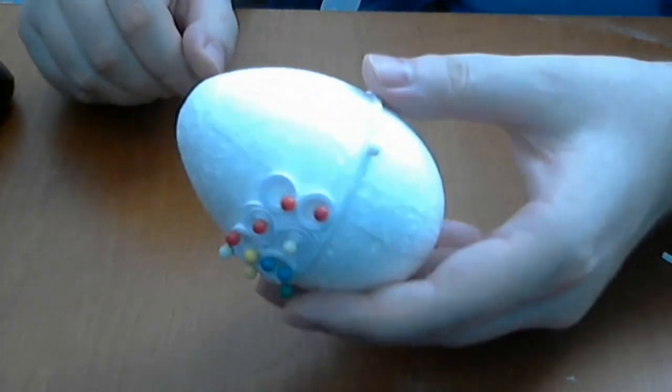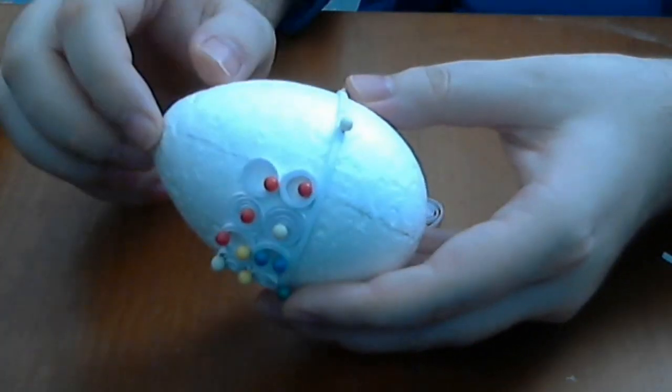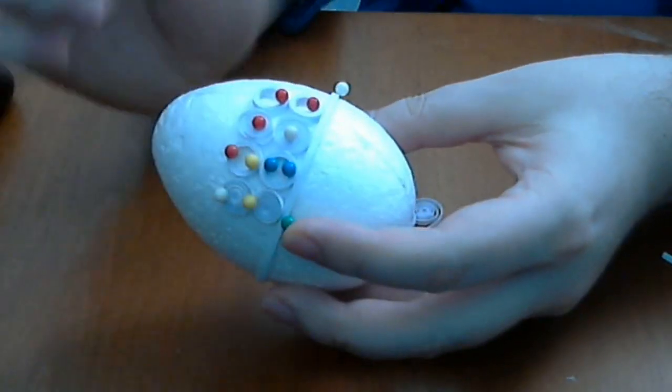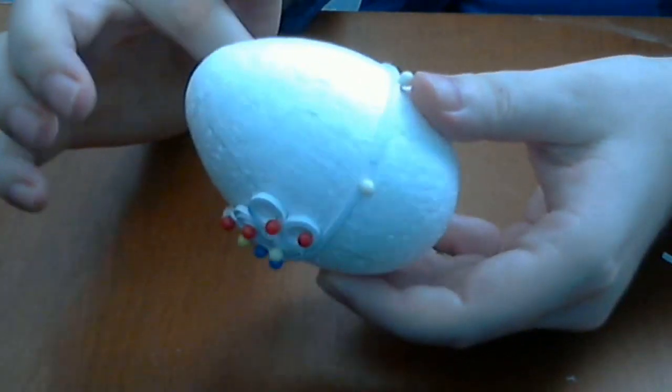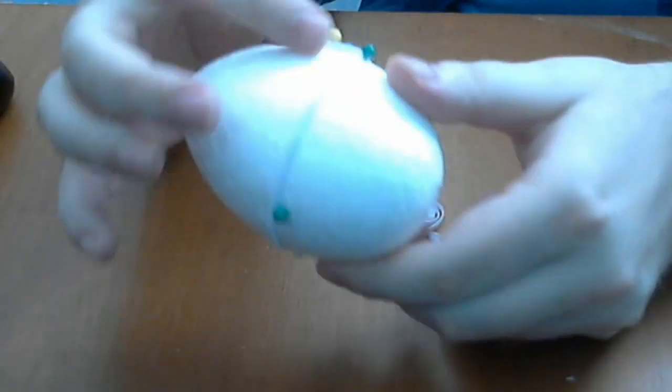Continue like this, alternate two empty circles with two S form quilling shapes until you close the circle.